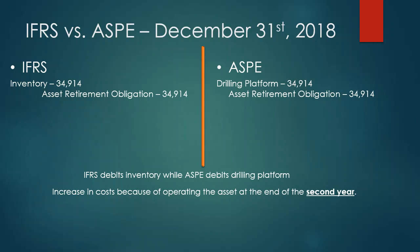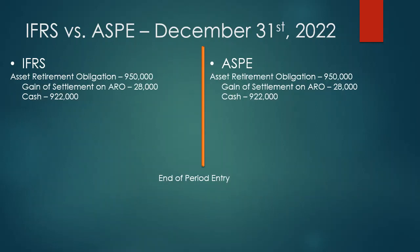At the end of 2018 the production cost increase entry is recorded: IFRS debits inventory, ASPE debits drilling platform, and both credit asset retirement obligation for $34,914. Finally, at the end of 2022 the company retires the asset. Asset retirement obligation is debited for the full amount, cash is credited for $922,000 paid, and a gain on settlement of $28,000 is credited — meaning the company paid $28,000 less than the obligation — and this entry is the same for both standards.